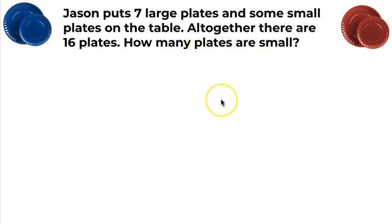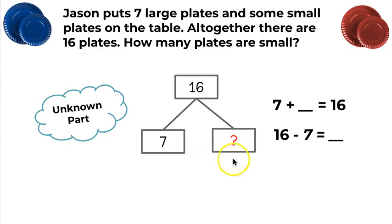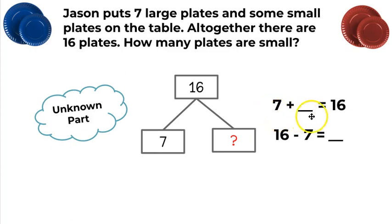Now that I have that information, I can build a model that makes sense in my mind. I like to build a math mountain. Here is my math mountain. I have 16 plates in all — that's my total, that's what the problem gave me. It also gave me seven large plates. I'm looking for the other part — how many small plates. So I'm going to write my equation: seven large plates plus some small plates equals 16 plates all together.